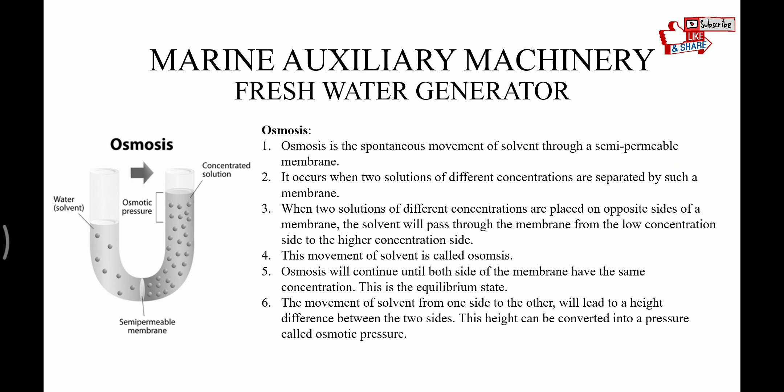The other principle is reverse osmosis. But before that we should know what is osmosis. Osmosis is the spontaneous movement of solvents through a semi-permeable membrane. It occurs when two solutions of different concentrations are separated by such a membrane. When two solutions of different concentrations are placed on opposite sides of the membrane, the solvent will pass through the membrane from the low concentration side to the higher concentration side. This movement of the solvent is called osmosis. Osmosis will continue until both sides of the membrane have the same concentration — this state is called equilibrium state. The movement of solvent from one side to the other leads to a height difference between the two sides, and this height can be converted into pressure which is called osmotic pressure.